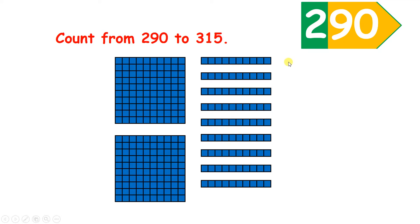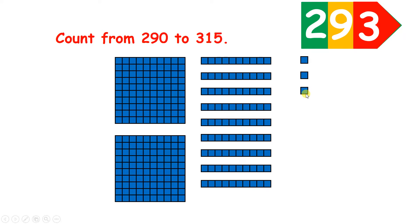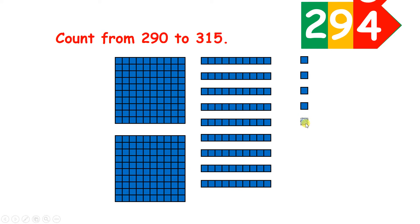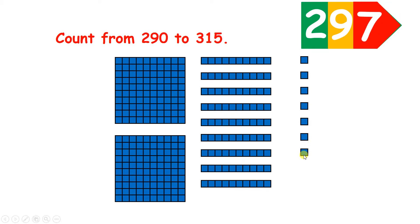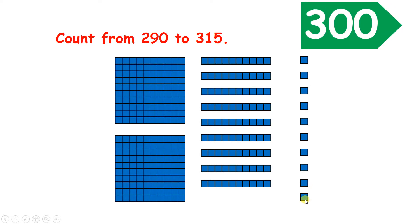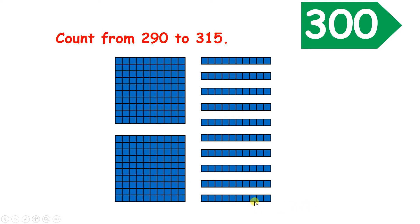So let's count on: 291, 292, 293, 294, 295, 296, 297, 298, 299, 300. The reason we have 300 is because we can regroup 10 of our units into a ten.